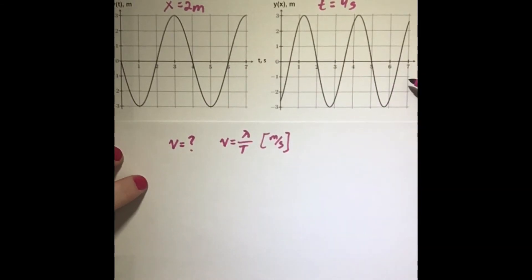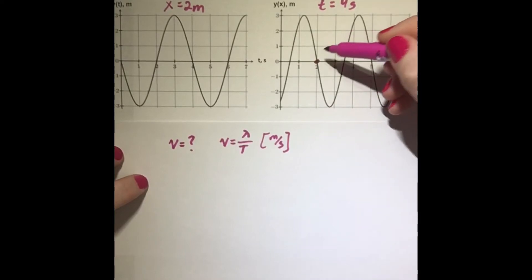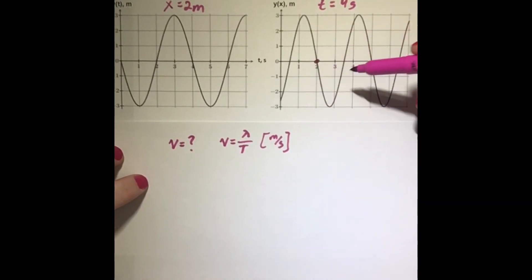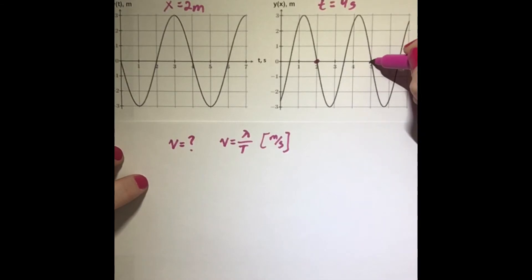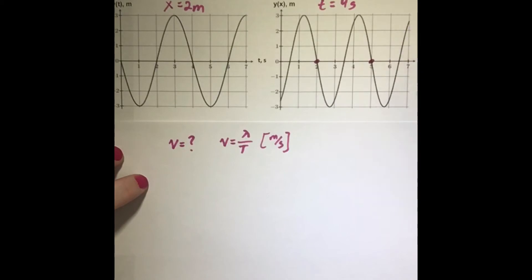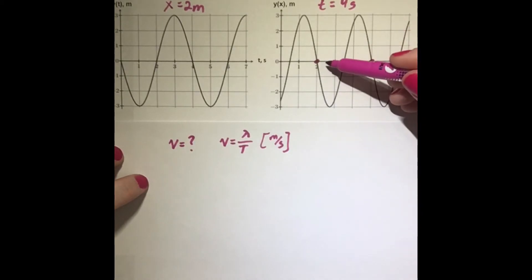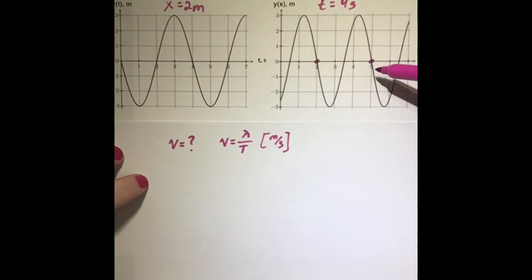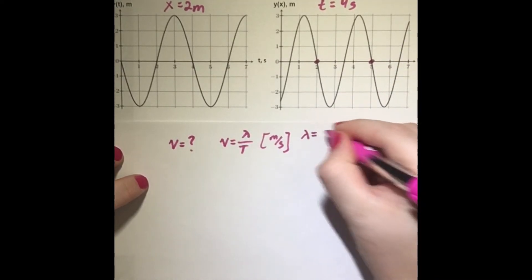To find the wavelength, we look at the position graph, because wavelength is the distance between two points that are the same on the graph. If we look at the point at x equals 2 meters, we want to find another point trending downward after crossing the intersection for the second time. Counting the distance between those two matching points — 1, 2, 3 — the wavelength is 3 meters. So lambda equals 3 meters.